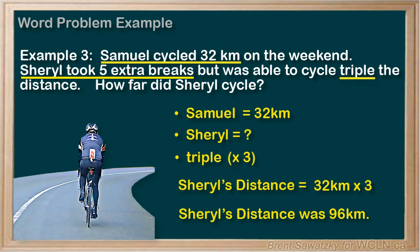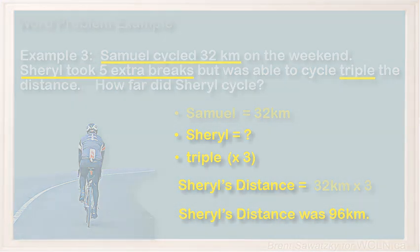Let's confirm with a quick reread of the question. Samuel cycled 32 kilometers on the weekend. Cheryl took five extra breaks, which doesn't seem to matter, but was able to cycle triple the distance — that matters. How far did Cheryl cycle? We did answer that: 96 kilometers. Does it still make sense? If Samuel rode 32 kilometers, we expect Cheryl to be a lot further — triple. So 32 times 3 equals 96 kilometers, being quite a bit further. That does make sense. Thank you.